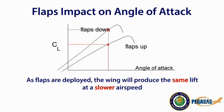Alternatively, flaps allow us to achieve a greater coefficient of lift for the same angle of attack, which provides for a reduction in approach speeds while maintaining the same amount of lift. Regardless of how a pilot utilizes flaps during an approach, it is important to determine if the angle of attack system being used is calibrated in multiple wing and flap configurations or in a single configuration.